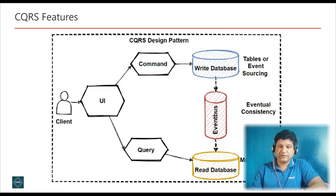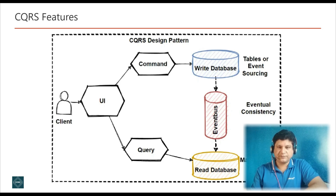The solution to this problem is the CQRS design pattern. This pattern applies the separation of concerns principle by using separate reading and writing databases with two different data stores. We can even use different database types — for example, NoSQL for the reading database and a relational database for CRUD operations. Commands perform write operations; queries perform read operations.